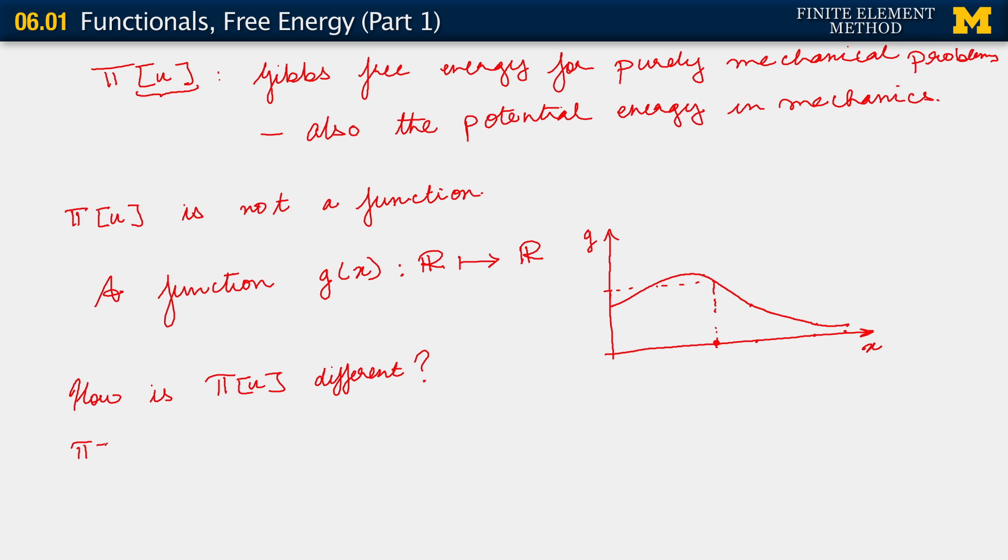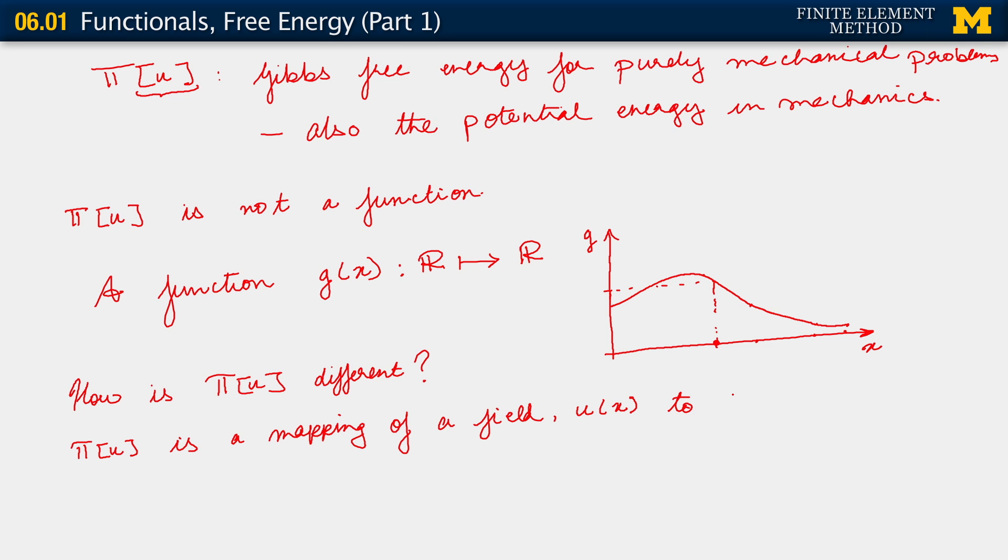So, π of u is a mapping of a field. A field u, which is properly a function of x. Because you pick a particular value on your domain x, and you get a particular value for the displacement. You get back a point value for the displacement. You get back a real number for the displacement. So that's the nature of u, u is a function. However, π is a mapping of that entire field u to the real numbers.